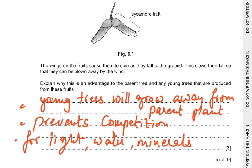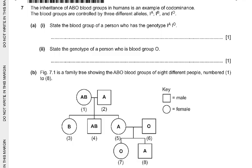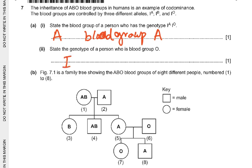The inheritance of ABO blood groups in humans is an example of co-dominance. The blood groups are controlled by three different alleles: IA, IB and IO. State the blood group of a person who has the genotype IAIO. The person has blood group A.